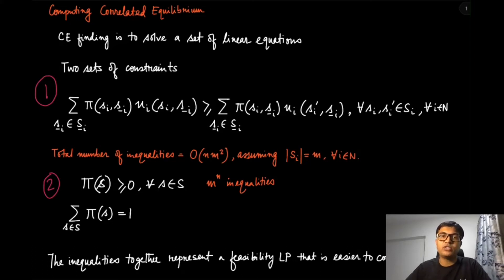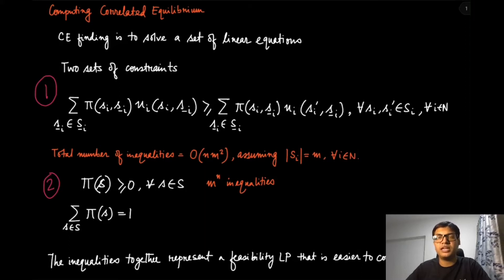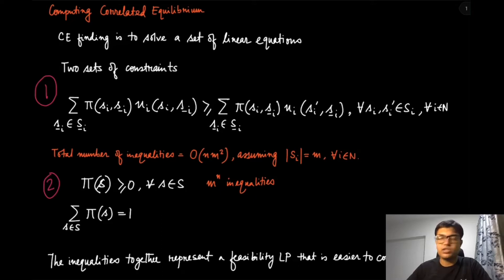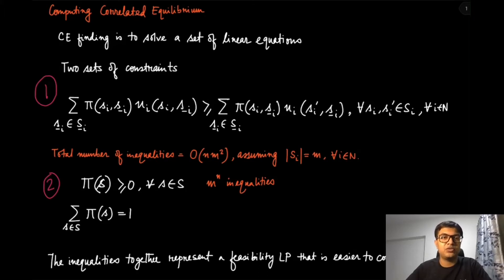correlated equilibrium also has another advantage: its computational tractability. We saw that mixed strategy Nash equilibrium is difficult to solve and is in particular a computationally hard problem, but that does not apply to correlated equilibrium. So let us look at what are the set of inequalities and equalities we need to satisfy in order for a correlated strategy to be a correlated equilibrium.